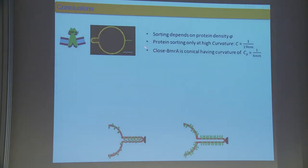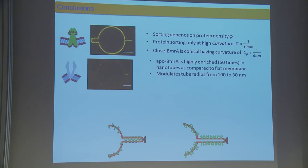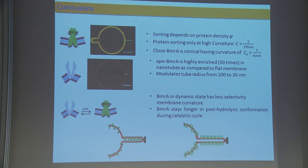In conclusion, ABC transporter in closed conformation has a membrane curvature around inverse of 90 nanometers. It has a conical shape, not cylindrical. Apo form modulates the membrane curvature by itself and reaches almost 30 nanometers. My protein is active and in dynamic state. Because of the flexibility and negative curvature preference, they move out to the surface.